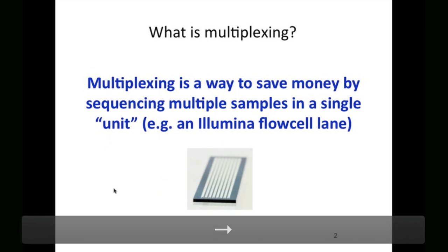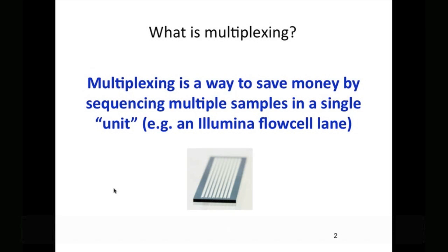So what is multiplexing? Multiplexing is simply a way to save money by sequencing multiple samples in a single unit, so in our case an Illumina flow cell lane.